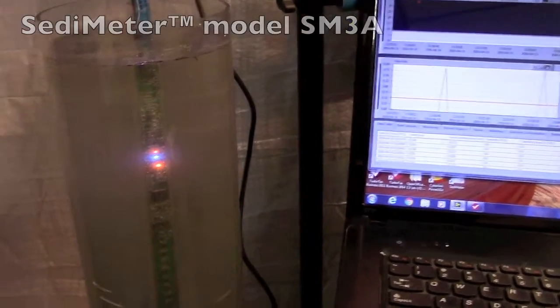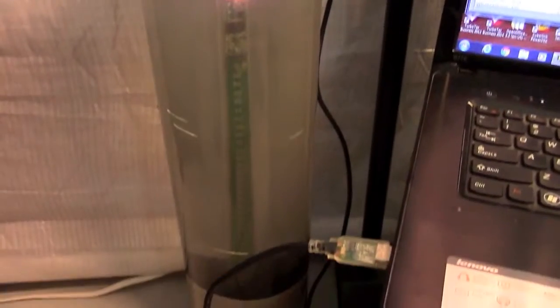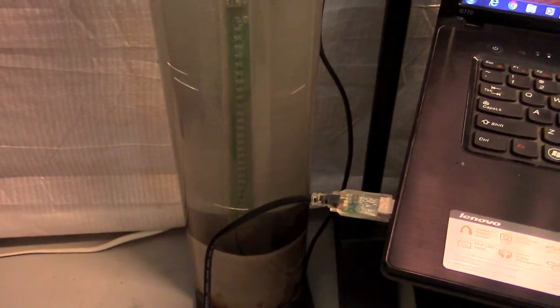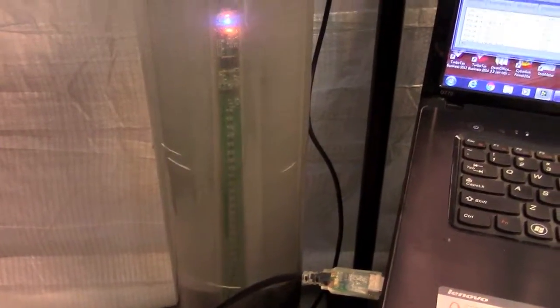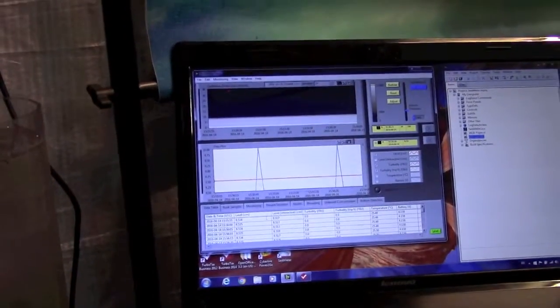In this video I will show you how the sedimenter can be used to measure sedimentation. Here we have it in a tank with some white sand on the bottom and a little bit of darker soil on top, and it's measuring in real time every five seconds.